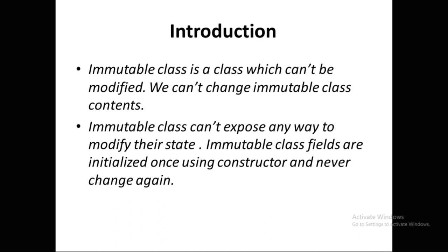An immutable class in Java is a class which cannot be modified — we cannot change its content. The basic idea behind an immutable class is that nobody can modify it. An immutable class cannot expose any way to modify its state. Immutable class fields are initialized once using the constructor and never changed again. We create a constructor in the class, initialize all properties using it, and there is no other way to modify the properties of the class.